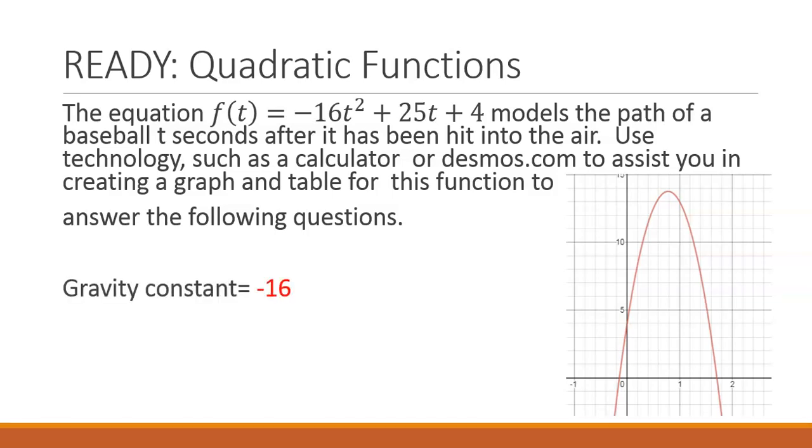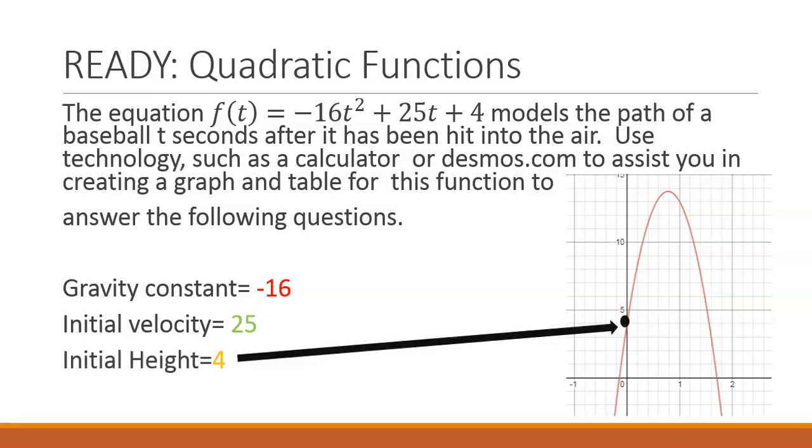Our gravity constant in this case is negative 16. Our initial velocity is 25, and our initial height is 4. We can see on the graph that 4 is the y-intercept, or the initial height. That is the height that the baseball was hit off the ground.